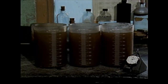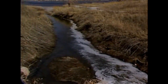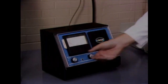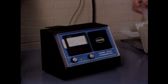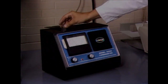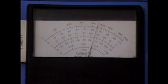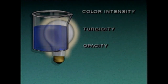Often it's necessary to monitor the concentration of suspended particles in processed liquids or gases. For example, wastewater is normally checked to make sure it's been properly treated before it's returned to the environment. One way to check the purity of a liquid or gas is to measure its clarity. Clarity is the measure of how clear or transparent a substance is, and it can be measured using different types of clarity analyzers. Three factors that affect how light passes through a substance are color intensity, turbidity, and opacity.